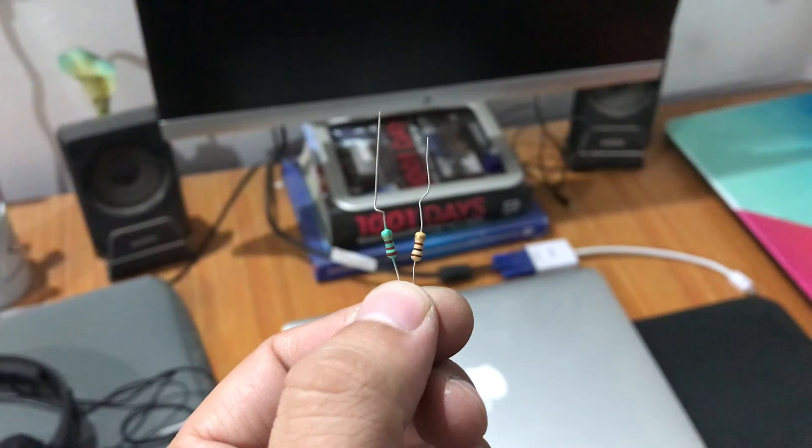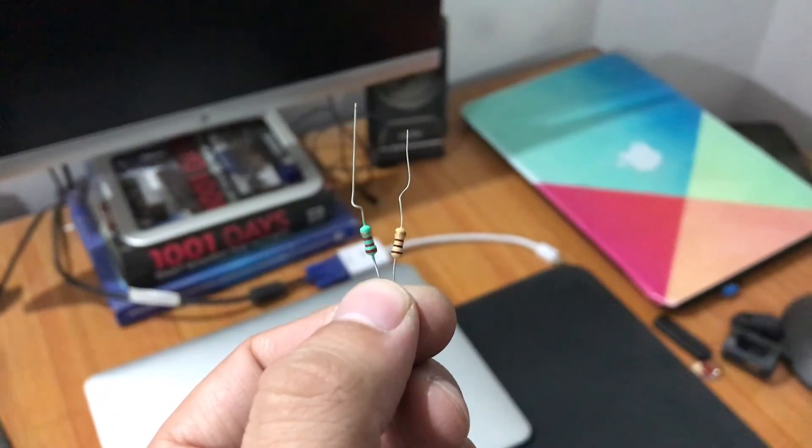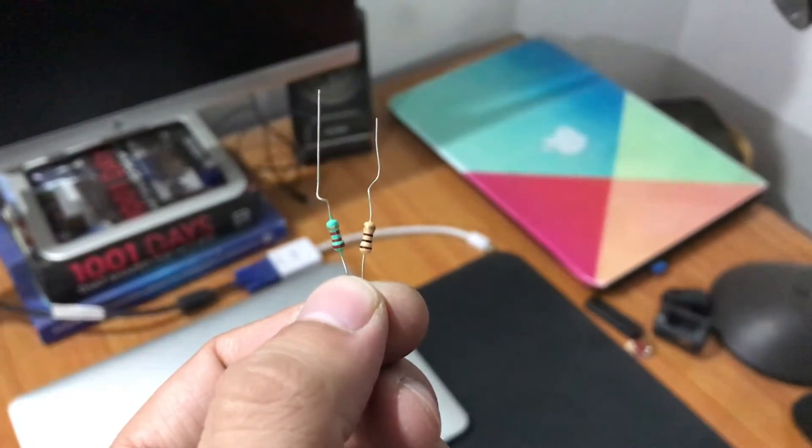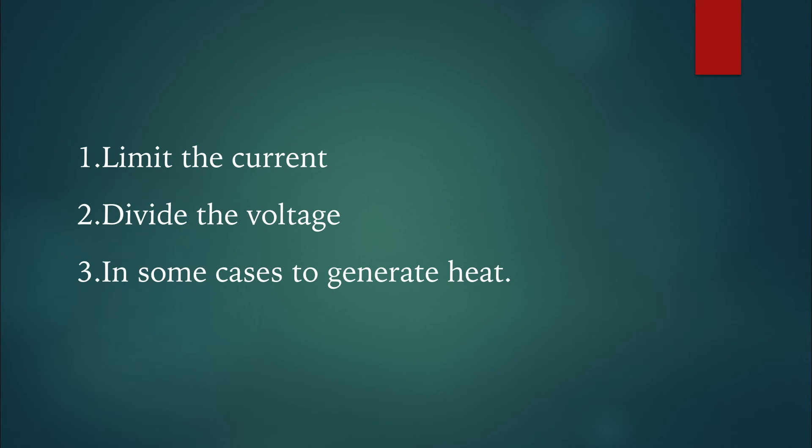A circuit element designed to have properties of resistance is called a resistor. We denote this element with letter R and this is the symbol used to indicate the resistor. We use such a resistor generally to limit the current or to divide the voltage or in some cases to generate heat.